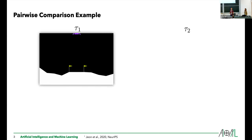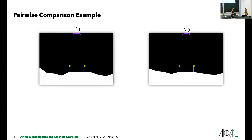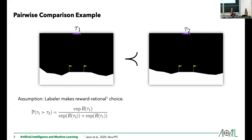Unfortunately the videos don't play on this computer, but imagine that this landing module is crashing into the ground — the goal of course is to land safely. In the first example the module crashes. Now we have this alternative trajectory which lands somewhat safely, although maybe not perfectly. Even though the second behavior may not be perfect, we can safely say we prefer it over the first. And if we assume the human made this choice with some reward function in mind — so it's rational with some reward function — we can try to infer this reward function.